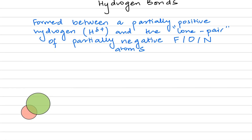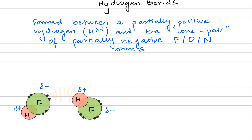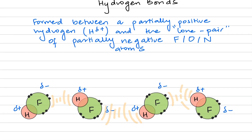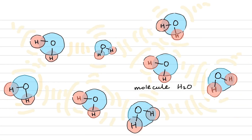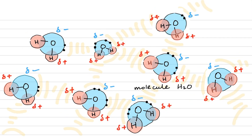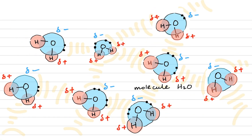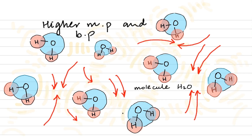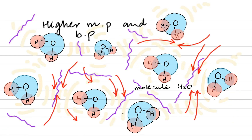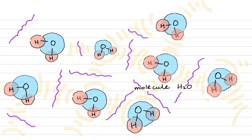Imagine a hydrogen fluoride molecule in front of another hydrogen fluoride. The fluorine atom is partially negative while the hydrogen atoms are partially positive because of the difference in electronegativity. Hydrogen bonds are formed between the partially positive hydrogen and the lone pairs of the partially negative fluorine atom. Coming back to the water molecule, remember the lone pairs of the oxygen atom give it a partial negative charge. These hydrogen bonds are really strong interactive forces and we need a lot of heat energy to break them.